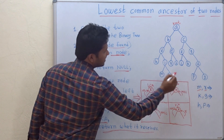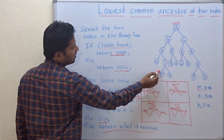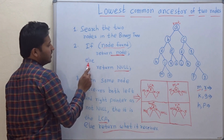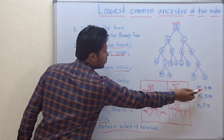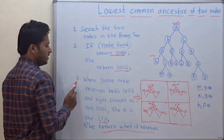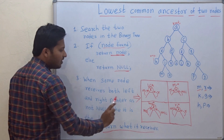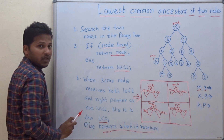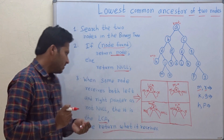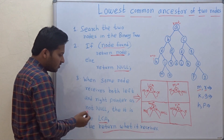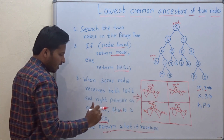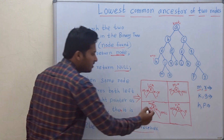Suppose M is found here, then you have to return M from this node — you have to return the address of M. Else, if it is not found — for example H is not equal to M or R — then you have to return NULL. The third step: when some node receives both left and right pointers as not NULL, meaning if a node from its left and right pointer receives non-null, then it is the lowest common ancestor of the two nodes. Else, return what it receives. So these are the four cases.